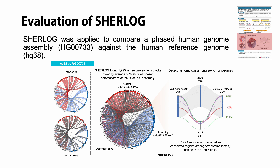We applied Sherlock to compare a phased human genome assembly against a human reference genome. Different from existing programs, Sherlock found syntenic blocks that fully covered all chromosomes of the phased assembly. Furthermore, Sherlock successfully detected non-conserved regions among sex chromosomes such as PARs and XTR.